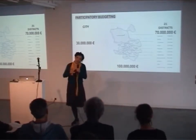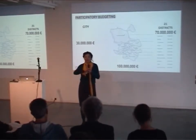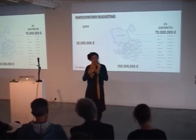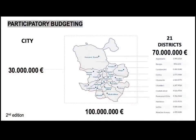30 million at city level for projects with a city-level scale, and 70 million divided into 21 districts. The equation for the division took into account the population but also income per area, per inhabitants per capita. This allowed the participatory budget to be redistributive.